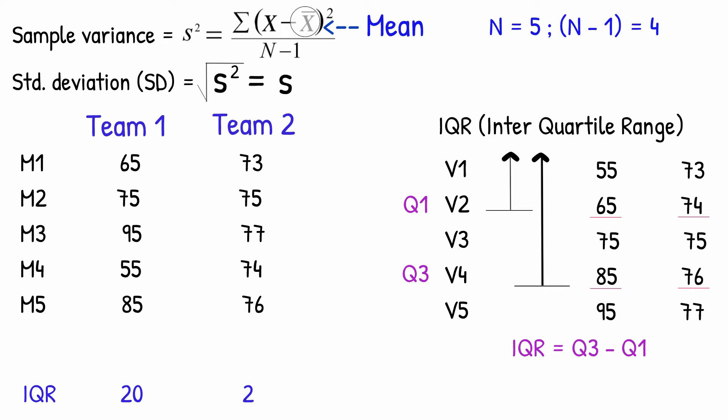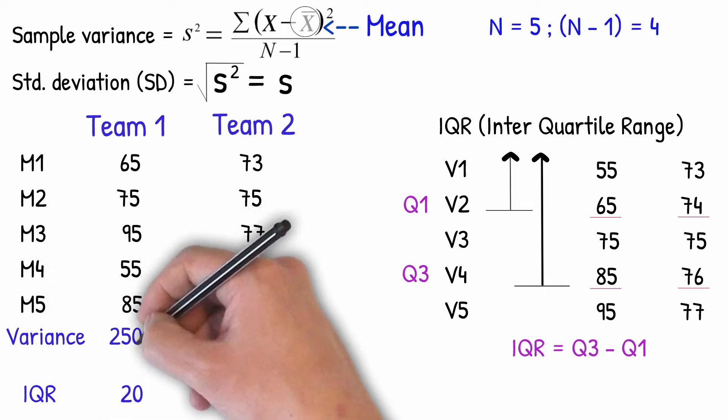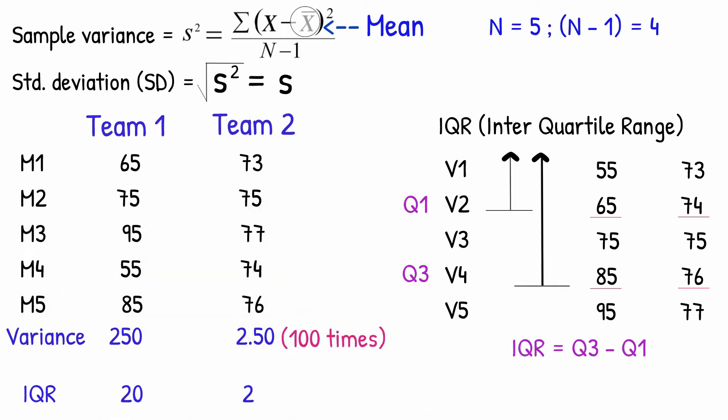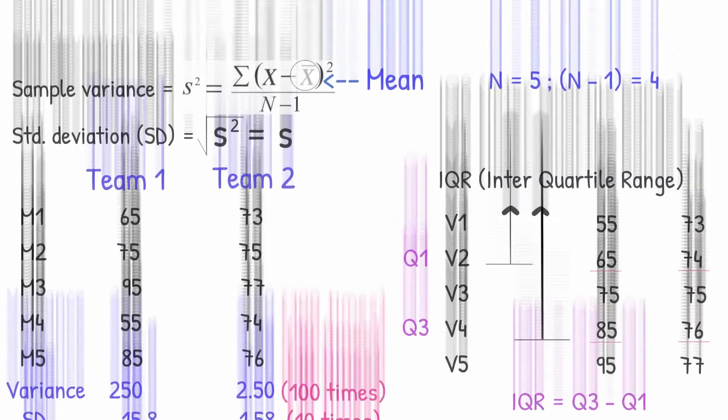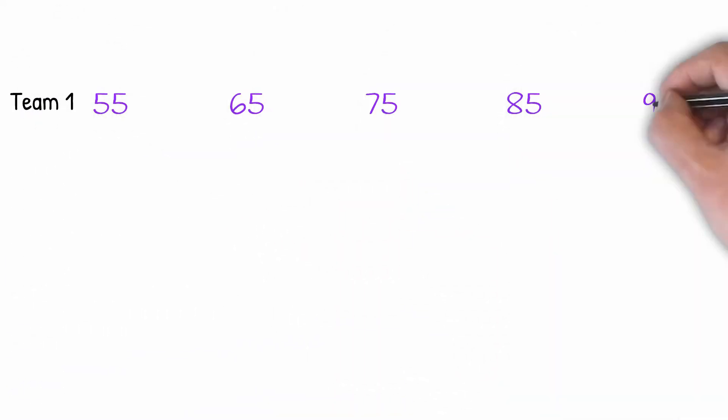Let's make some more observations on these figures. Variance of Team 1 is 100 times more than that of Team 2, so obviously the standard deviation of Team 1 is 10 times more than Team 2. IQR for Team 1 is 10 times that of Team 2. These three measures themselves tell you how sales figures of Team 1 are spread out in comparison with Team 2.